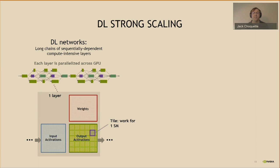A typical neural network consists of long chains of interconnected layers requiring massive compute. The parallelism is broken up into small, sequentially dependent chunks of work. Each layer performs an operation similar to a matrix multiplication, taking input activation tensors and multiplying with weight tensors to create an output activation tensor. To map onto the GPU, the output tensor is broken down into smaller tiles, and each SM works on one tile.